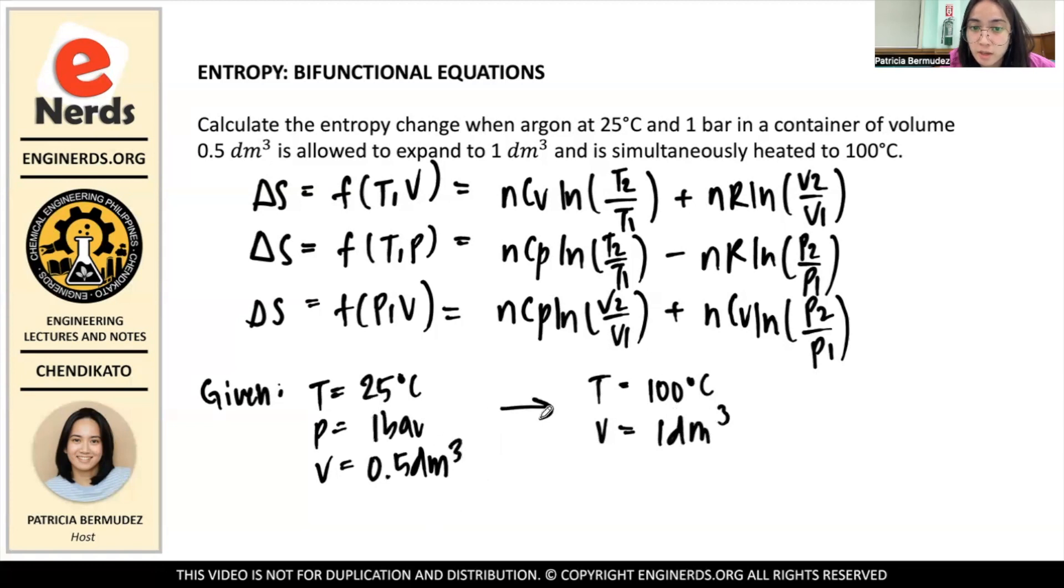We don't need to change units since they're all consistent. And since there's no P2 given, we assume that P is constant. And since P is constant, your change in S is a function of T and V.